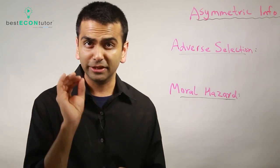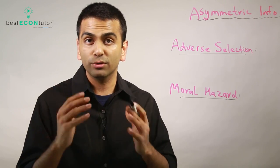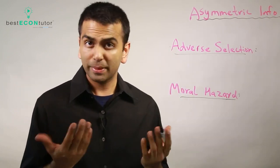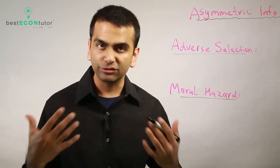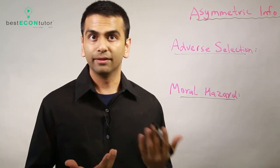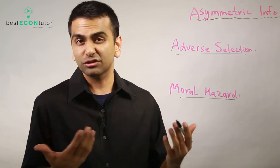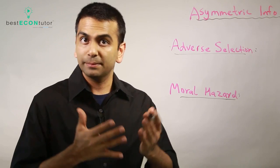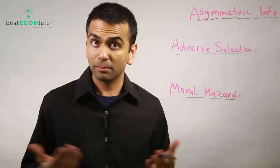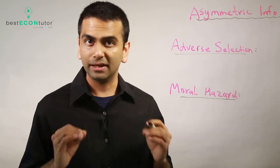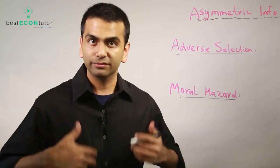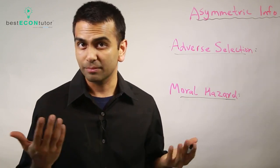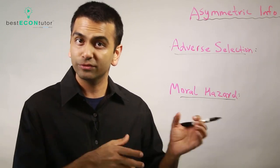Let's keep a consistent example. Say you own a health insurance company. Some people are healthy — they exercise, they eat well — so they're less likely to get certain diseases and you're less likely to spend a lot of money on them. Versus some people are unhealthy, so you're expecting to spend more money on them, because as the insurance company you're paying for their medical bills while they give you a monthly premium — you're taking their risk for them.